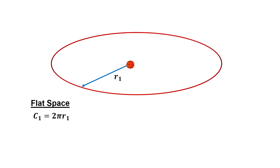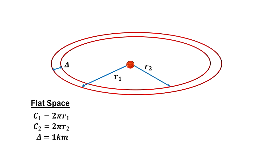If we existed in flat Euclidean space, we would calculate the circumference of an orbit one kilometer closer to the Sun and see that the distance between the orbits is one kilometer.